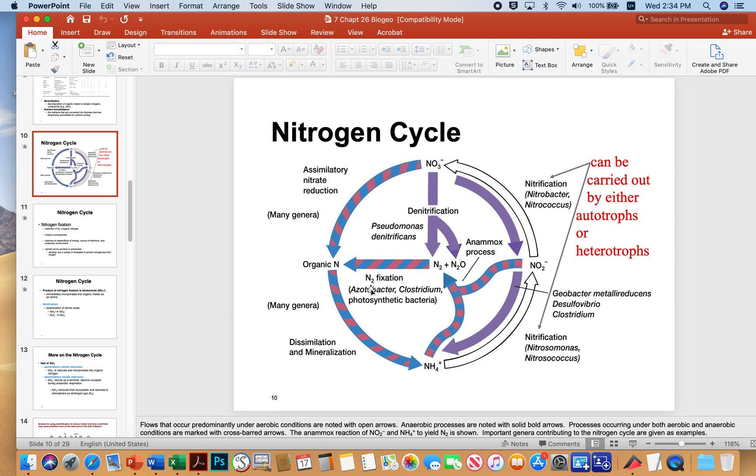Some of these microbes like azotobacter are found in the soil. Clostridium is a soil bacterium. Photosynthetic bacteria are also soil bacteria, but there's microbes that intimately associate with plant tissue and give that plant tissue the ability to stockpile nitrogen by having that little symbiont associated with them, so it's a really neat association.